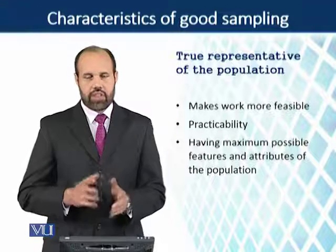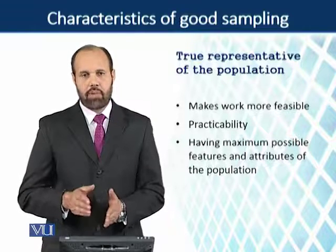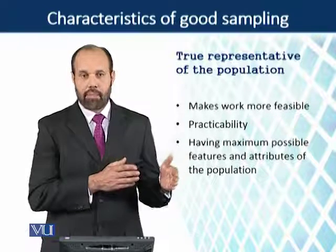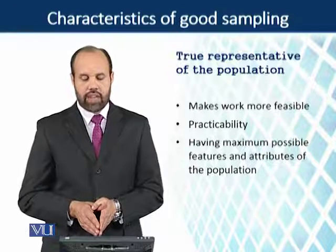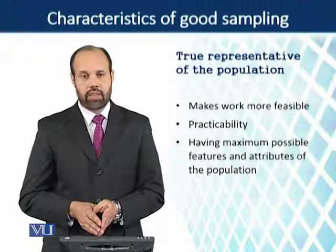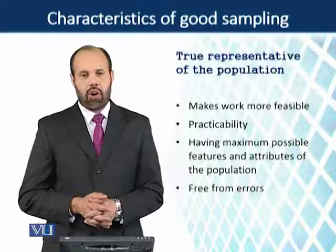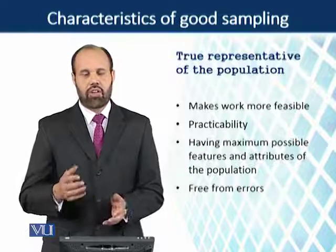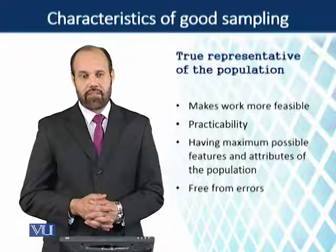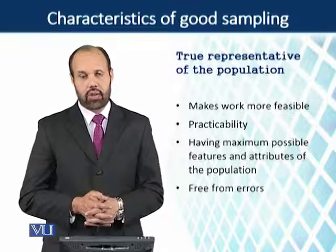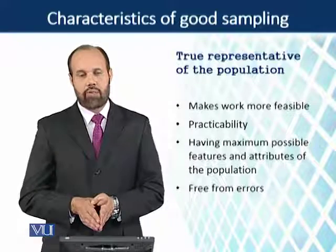A sample must have the maximum features and human attributes and characteristics of the population group represented within it. Having maximum possible features and attributes of the population is a condition — a true representative sample would have all those features which are to be explored. Above all, a sample must be free from any sort of errors: free from random errors, sampling errors, and measurement errors. There are many errors related to the internal and external validity of the study, and a good sample is always free from these errors.